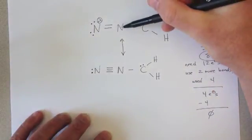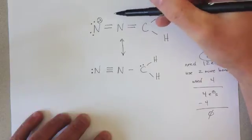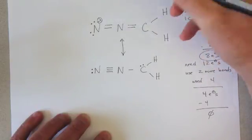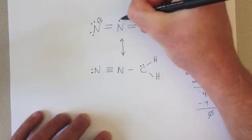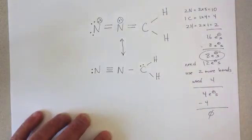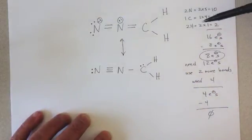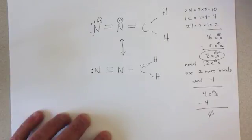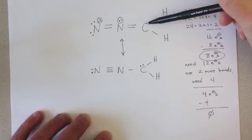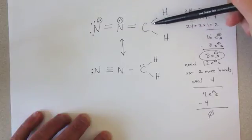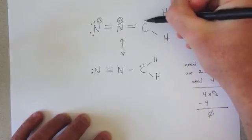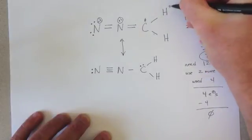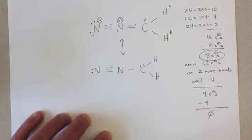This nitrogen, five valence electrons, minus four bonds, minus zero lone pair electrons, gives me a formal charge of plus one. And since this molecule overall is neutral, everybody else, my formal charges need to add up to zero. This carbon has four valence electrons, minus four bonds. It has a formal charge of zero. And each of these hydrogens has a formal charge of zero. One valence electron, minus one bond.